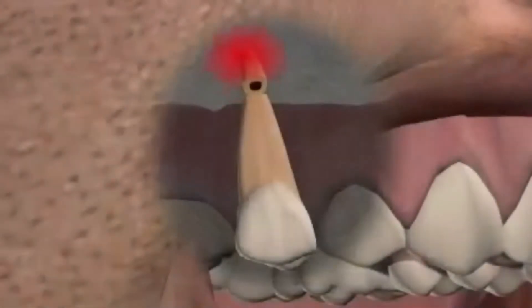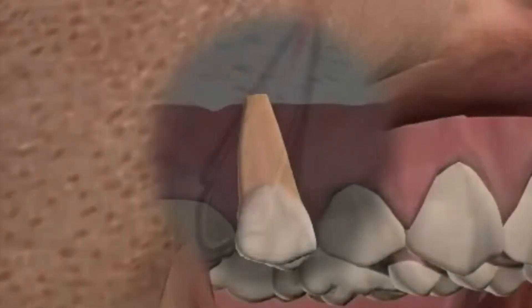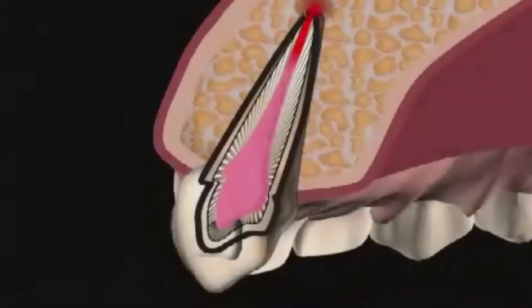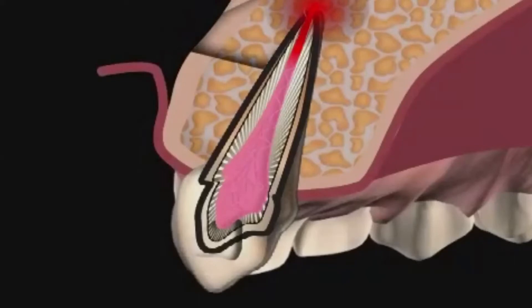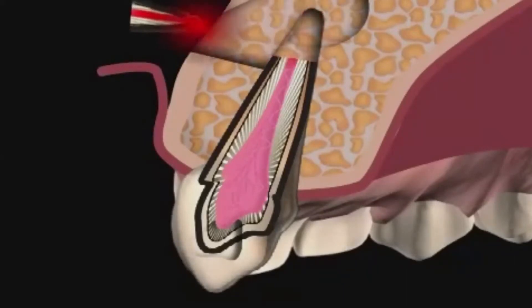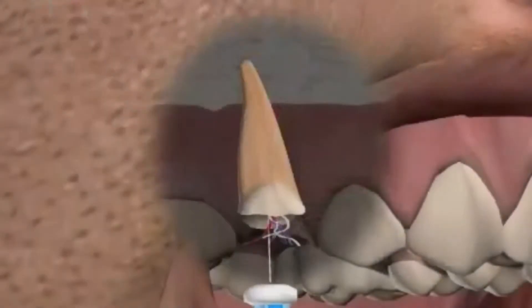If the root treatment revision does not lead to the desired result, or if the infection is already too large, the surgical cleaning of the so-called focus, also known as a root tip resection, is usually the last option. Hence, tooth canal filling and cleaning are a top priority both during root treatment and root tip resection.